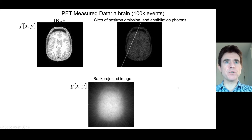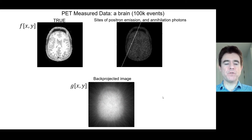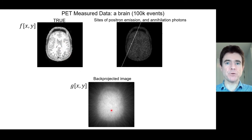For an even more complicated distribution inside the scanner field of view — here an example cross-section of a brain — doing the same process with 100,000 events gives a back-projected image. Because of the limited number of events there is noise, but as we accumulate more events the noise reduces, and we end up with a clear mapping of each point source of different intensity to a point spread function of corresponding amplitude.